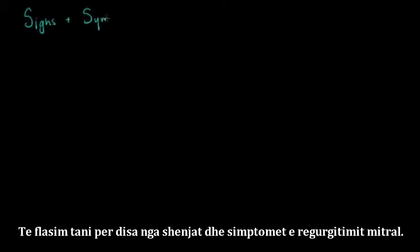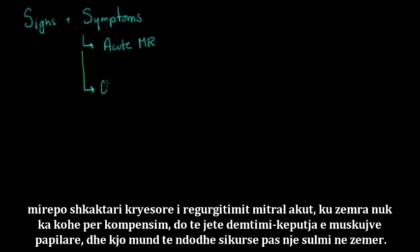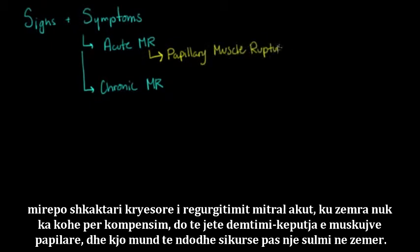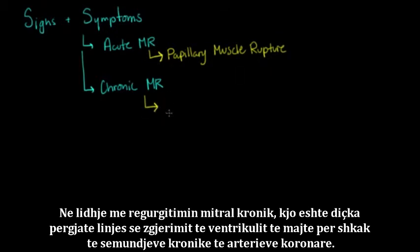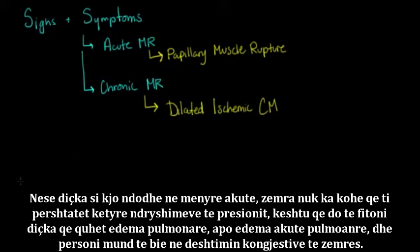Now let's talk about signs and symptoms of mitral regurgitation. You can have acute or chronic mitral regurgitation. An important cause of acute mitral regurgitation — where the heart has no time to compensate — would be something like a papillary muscle rupture, which could occur after a heart attack. If this happens acutely, the heart has no time to adapt to these pressure changes, so you get flash pulmonary edema or acute pulmonary edema, and the person may go into congestive heart failure. This is a medical emergency.